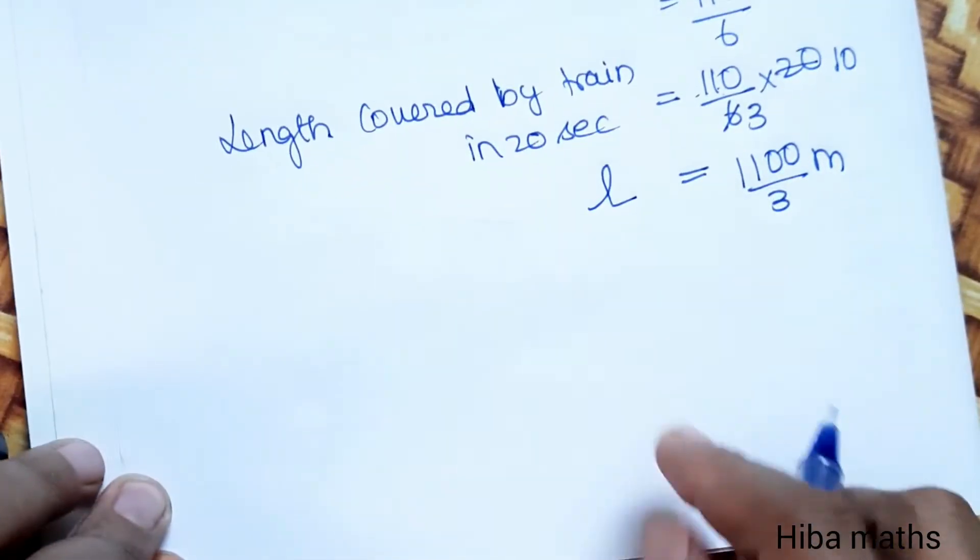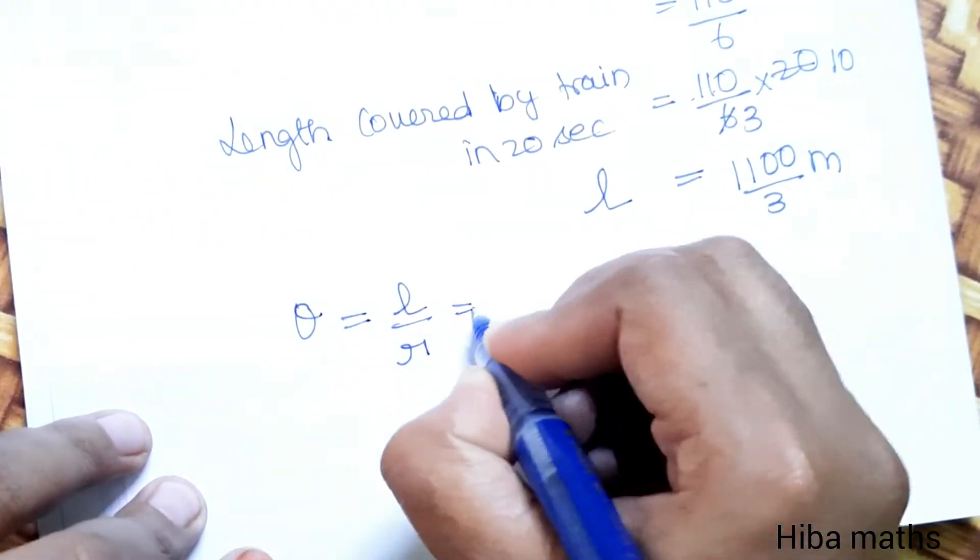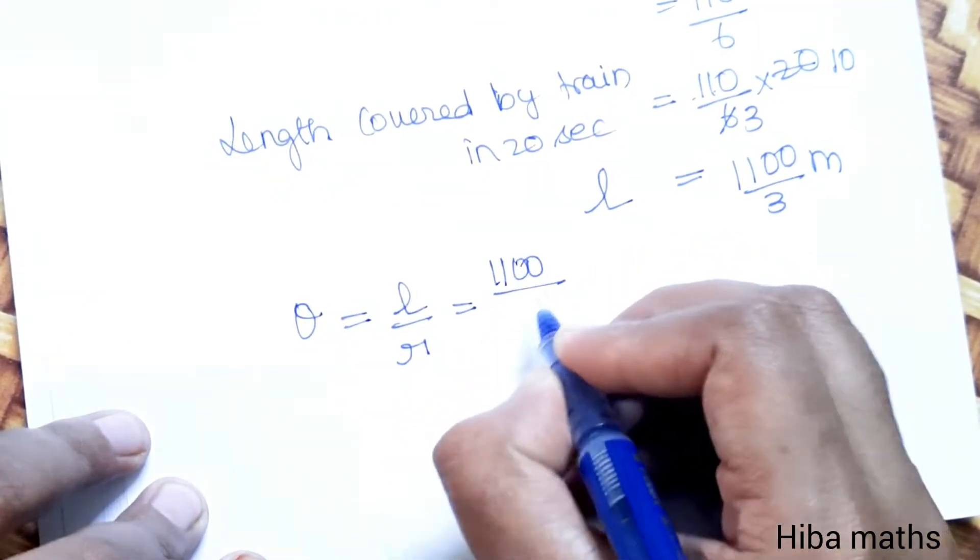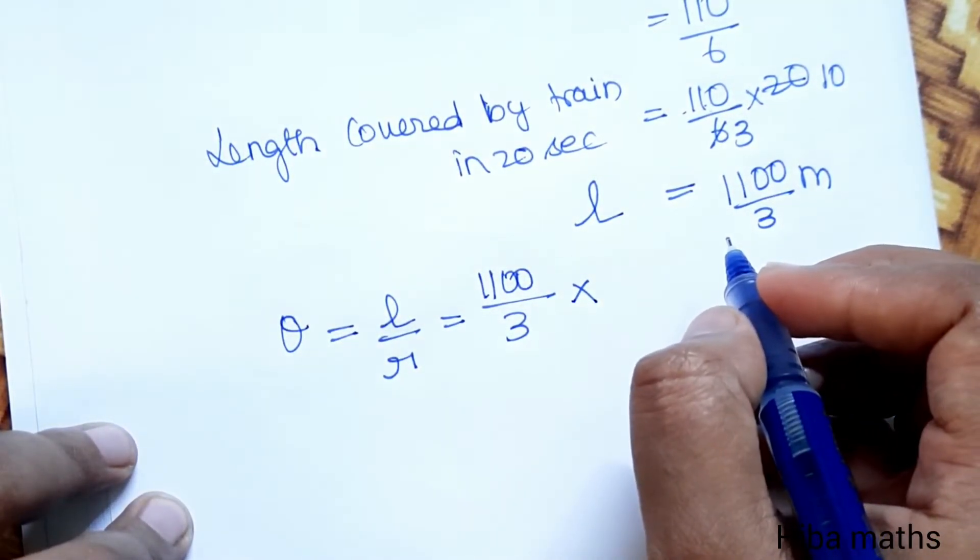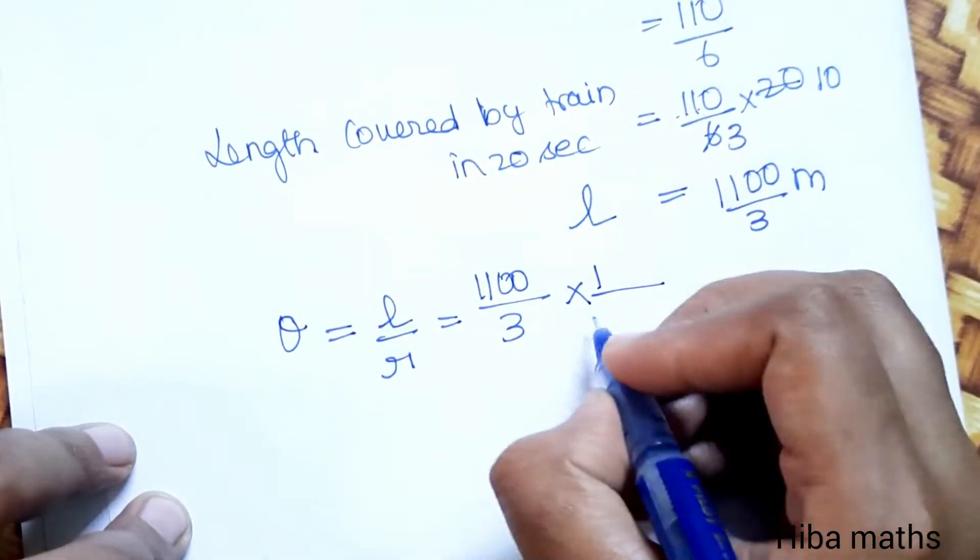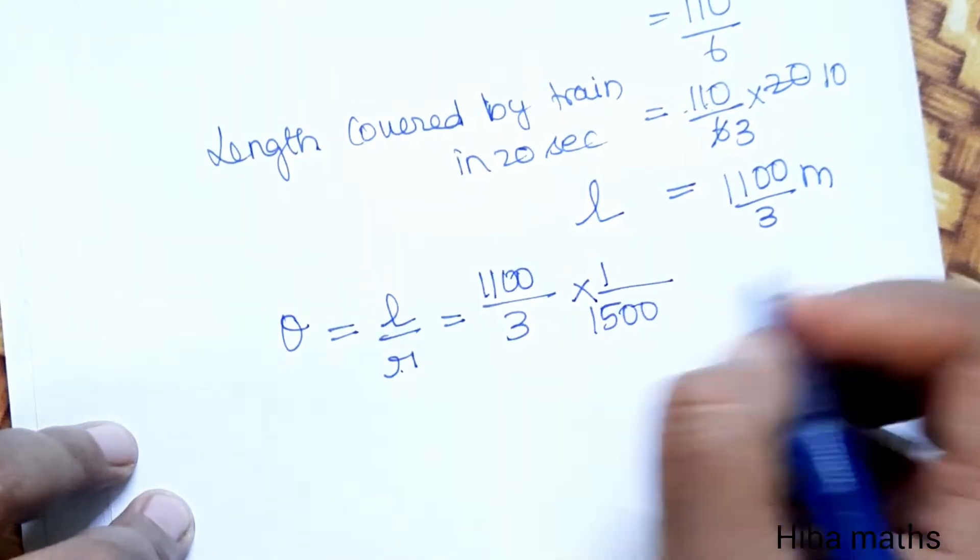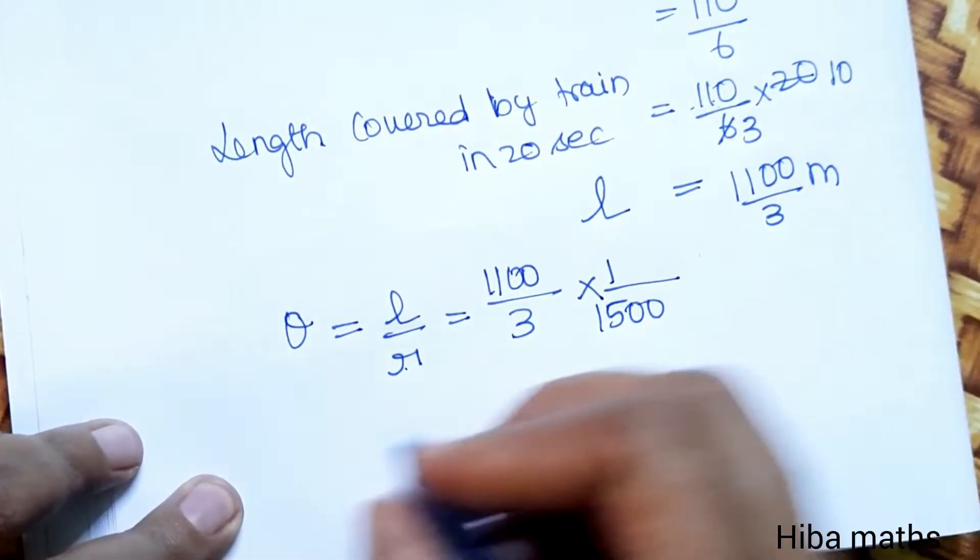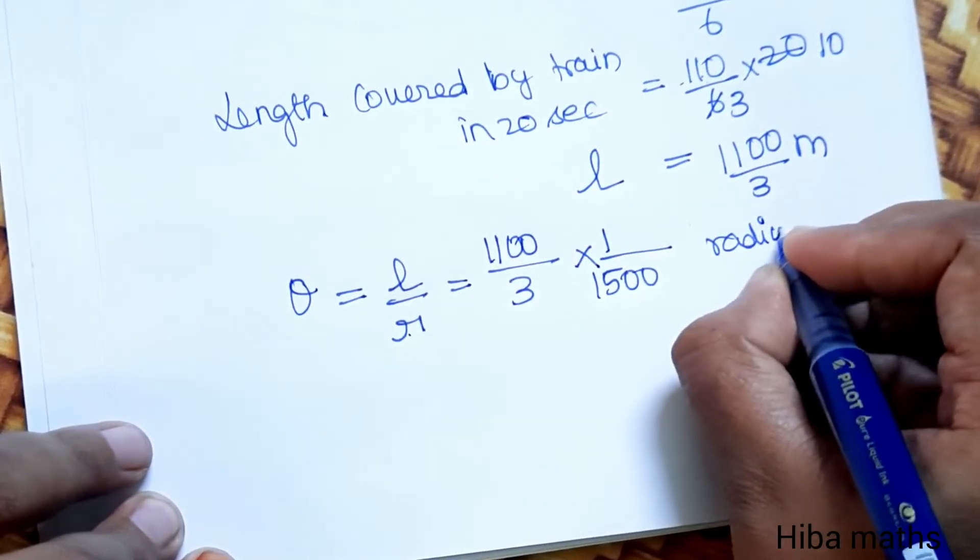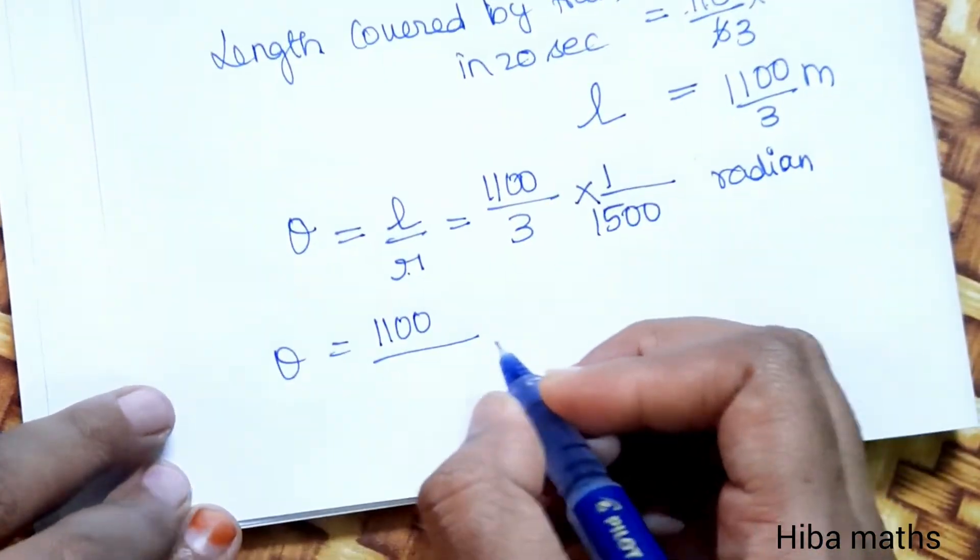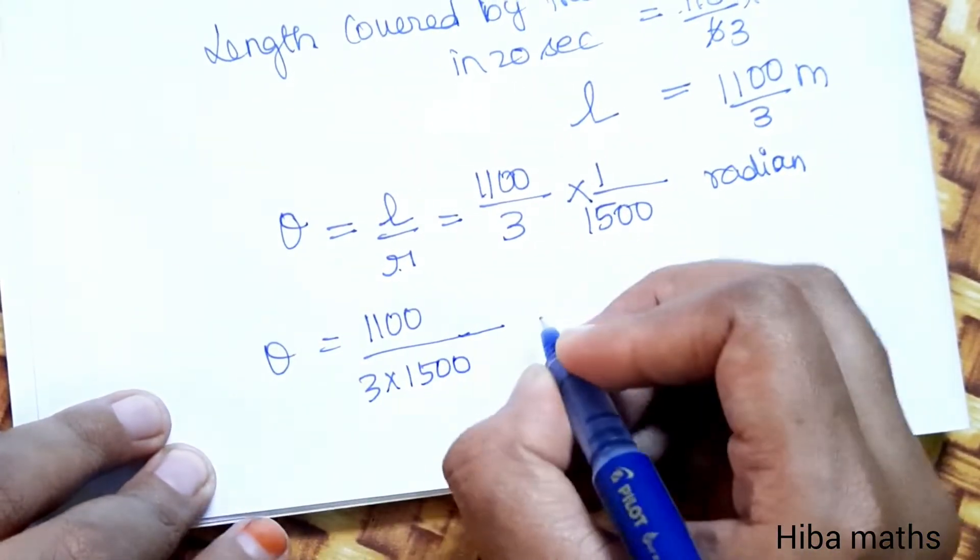Now we will find the angle. So theta is equal to L by R. The length is 1100 divided by 3, and R is 1500. So theta equals 1100 over 3 times 1 over 1500.